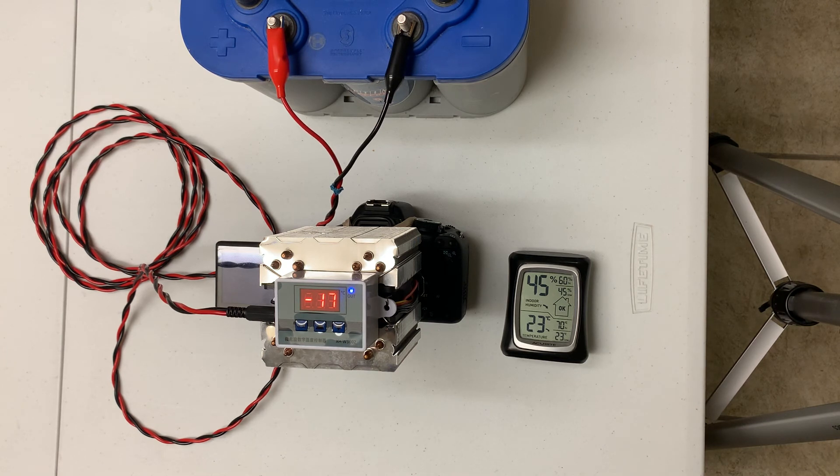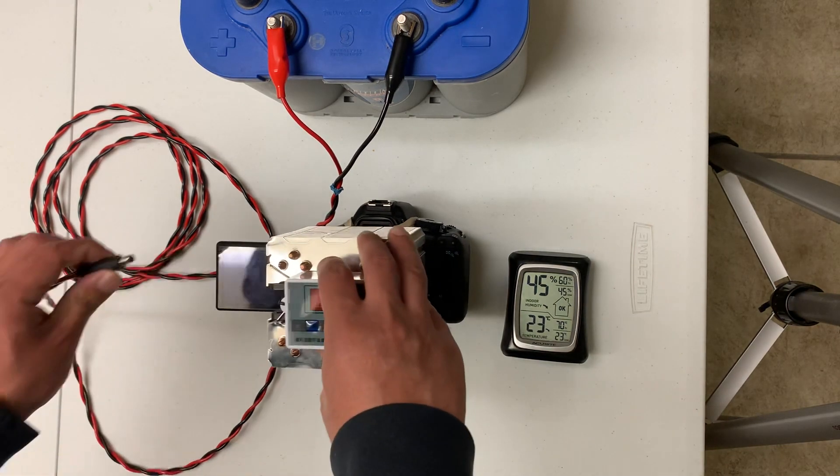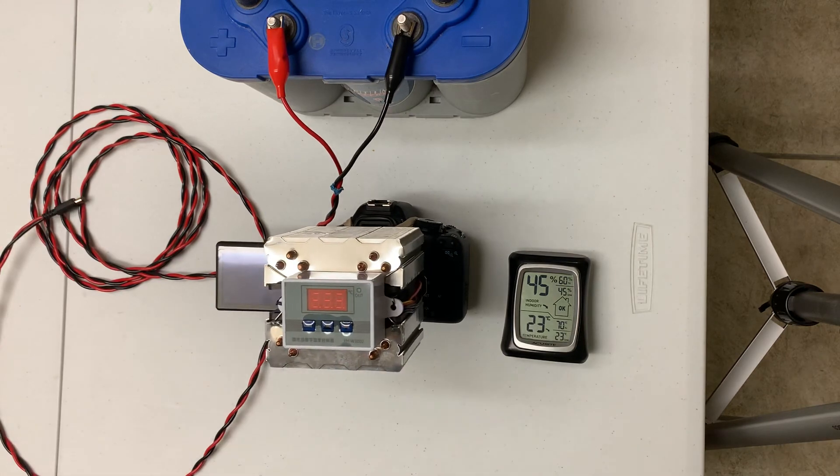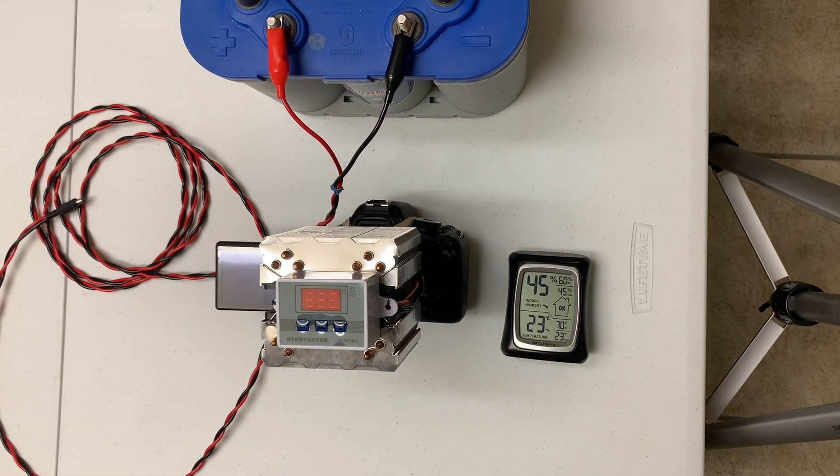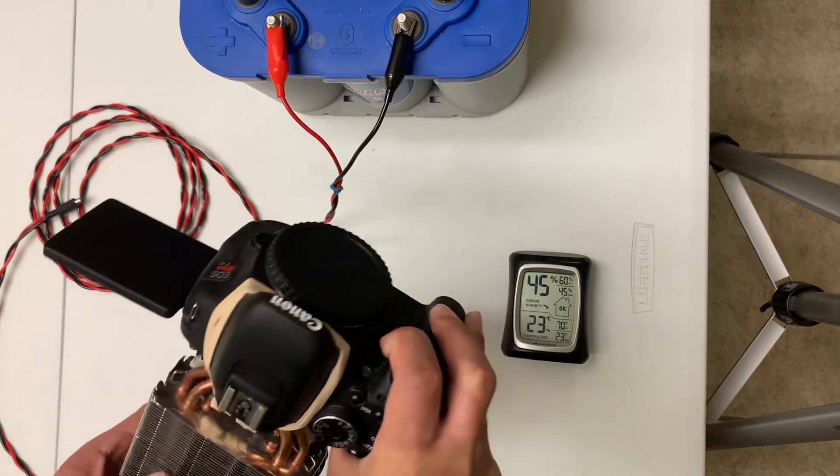Okay, so when we get to the end of our photography routine, we simply unplug the system, like this, and then the cooler is off. Then we can take the camera off the telescope. So that's it, thank you.